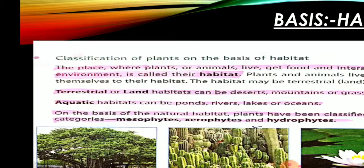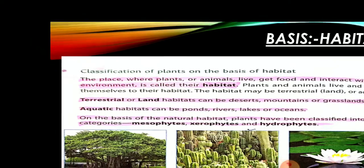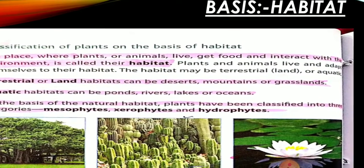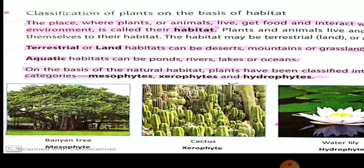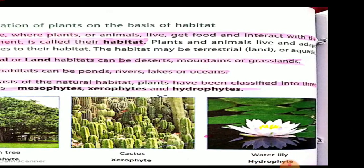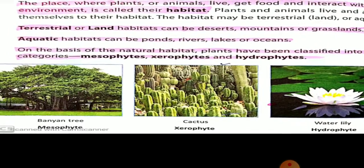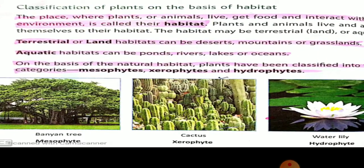So we are having the main two categories: terrestrial and aquatic. But terrestrial पे भी अगर हम देखें तो दो categories बन जाती हैं। Total हम देखें तो: mesophytes, xerophytes and hydrophytes. Aquatic habitats होती हैं — ponds, rivers, lakes and oceans. Terrestrial habitats हैं — deserts, mountains या grasslands. On this basis we are having three categories: mesophytes, xerophytes and hydrophytes.